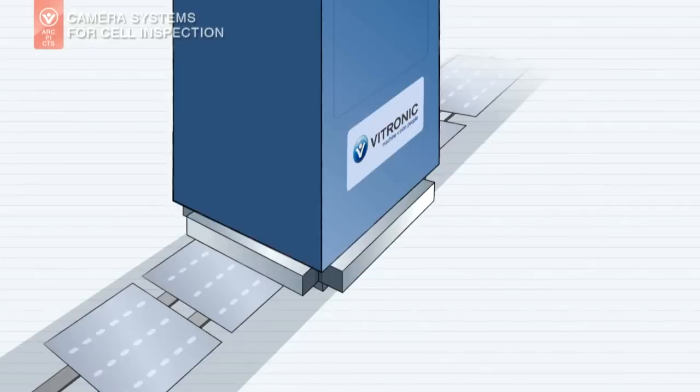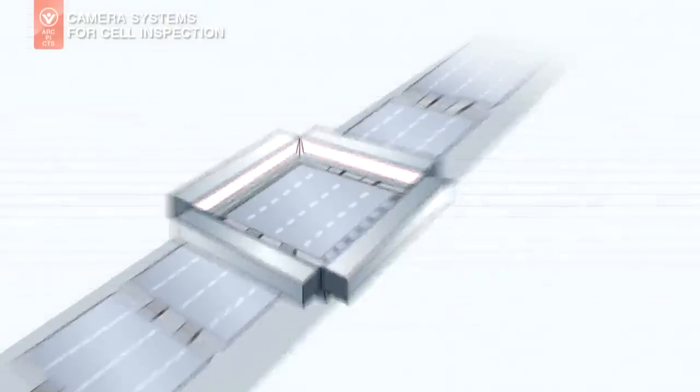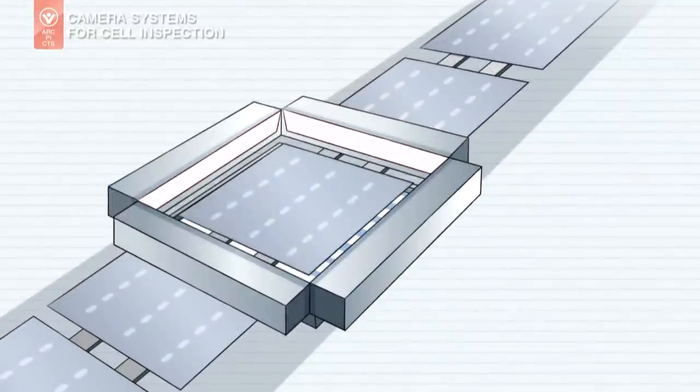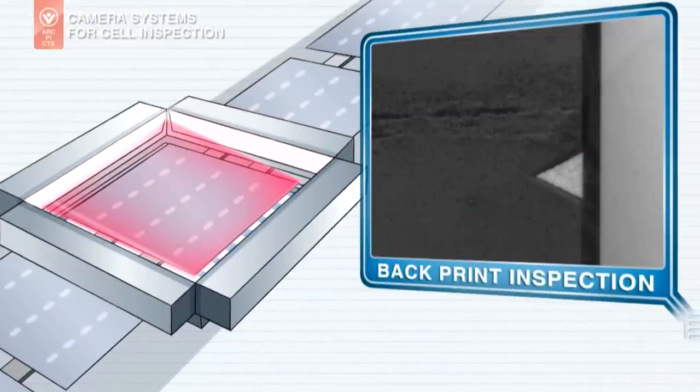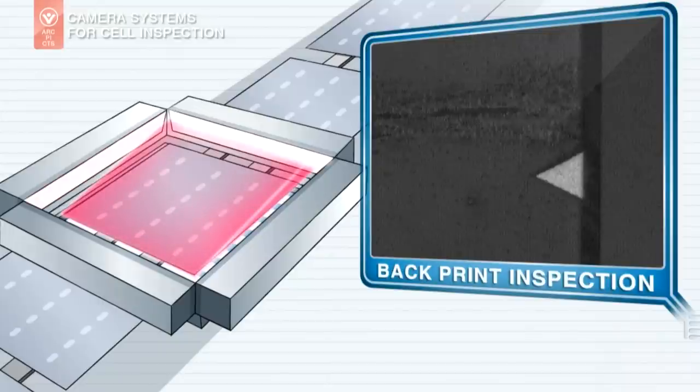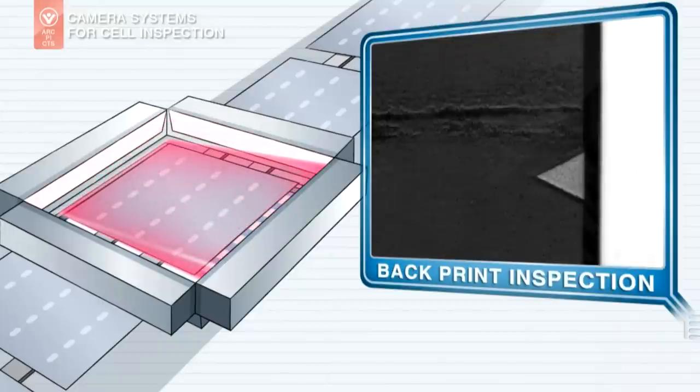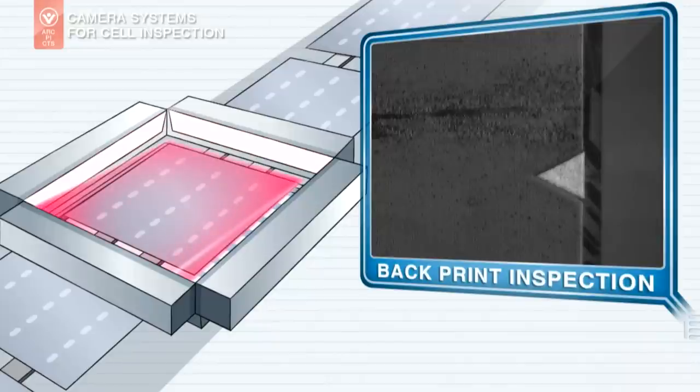To do this, the Vitronic Solar PI system captures four images each from a different lighting angle. A relief image of the surface is then created. Breaks in edges, deviations in the print surface as well as disruptions in the conductor are detected reliably.